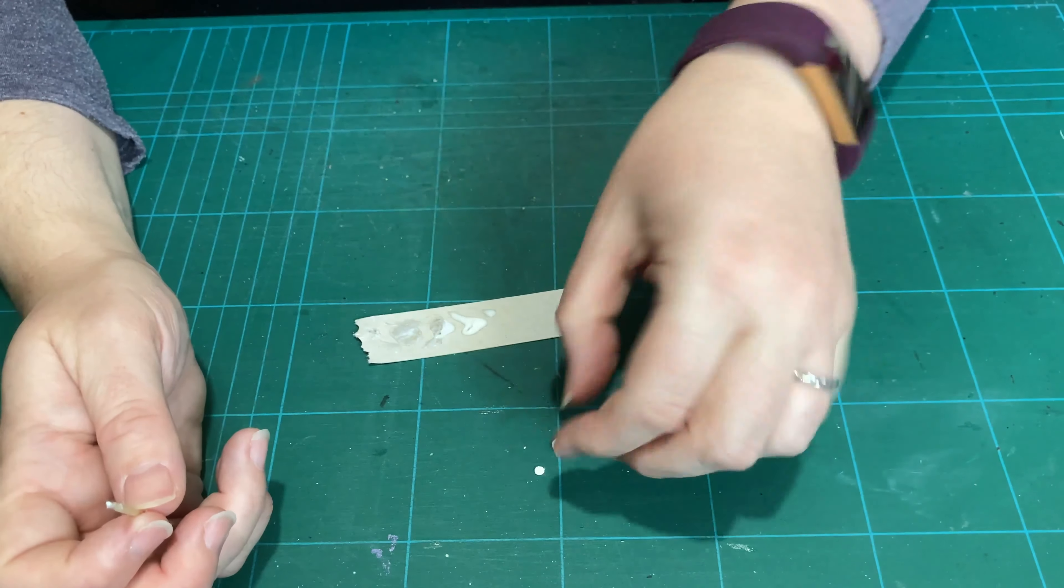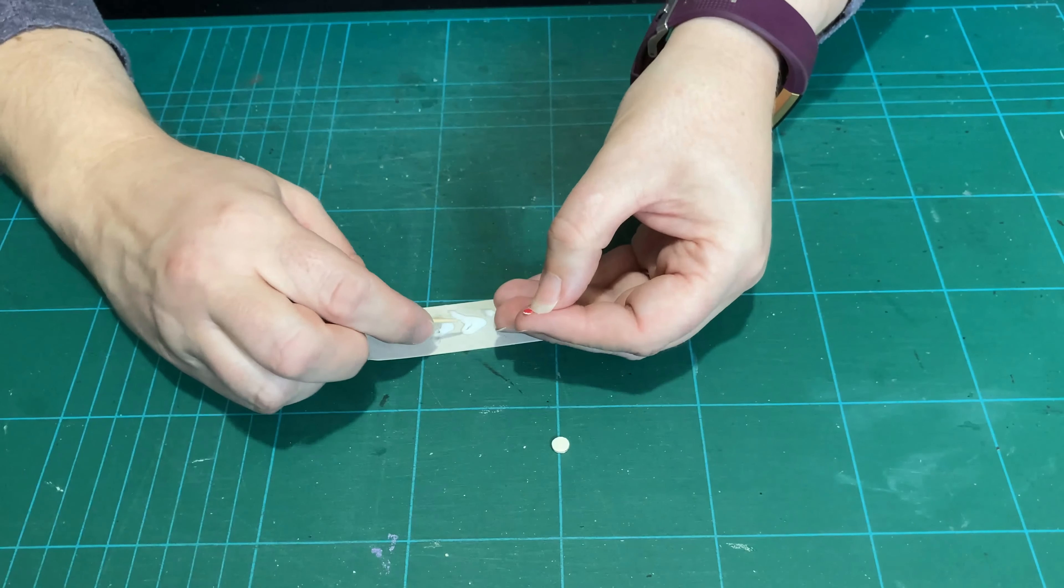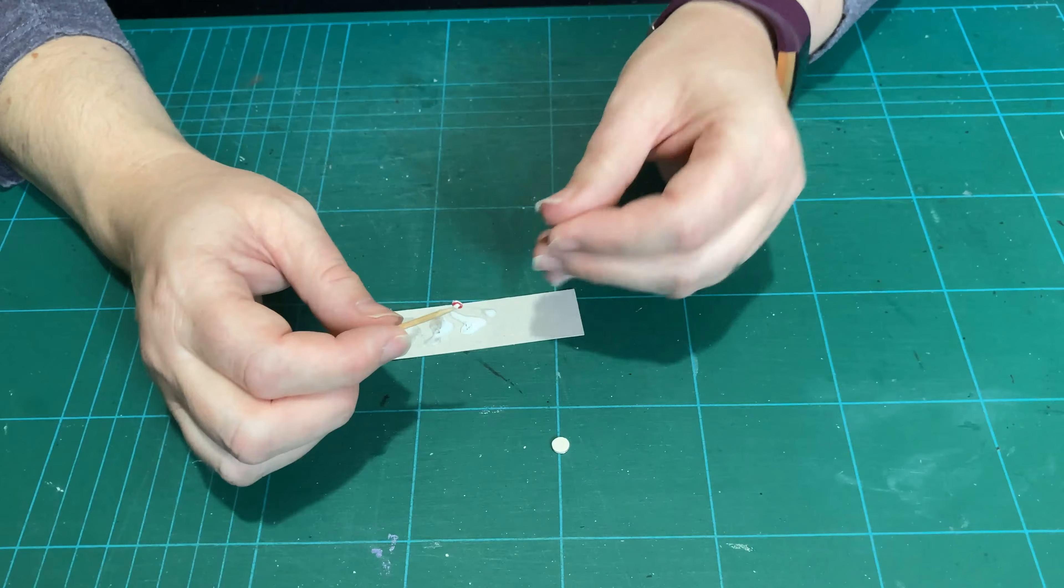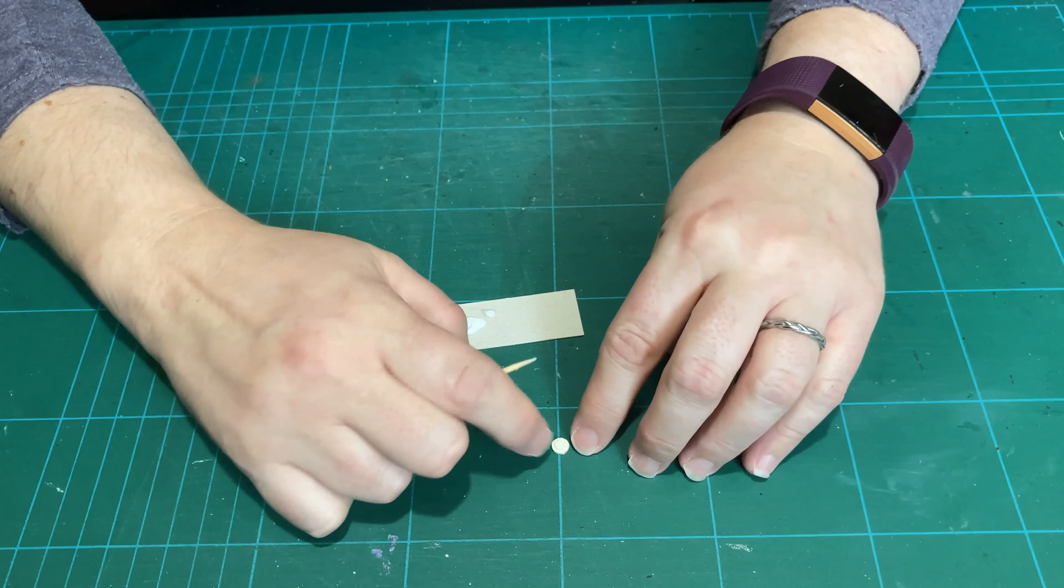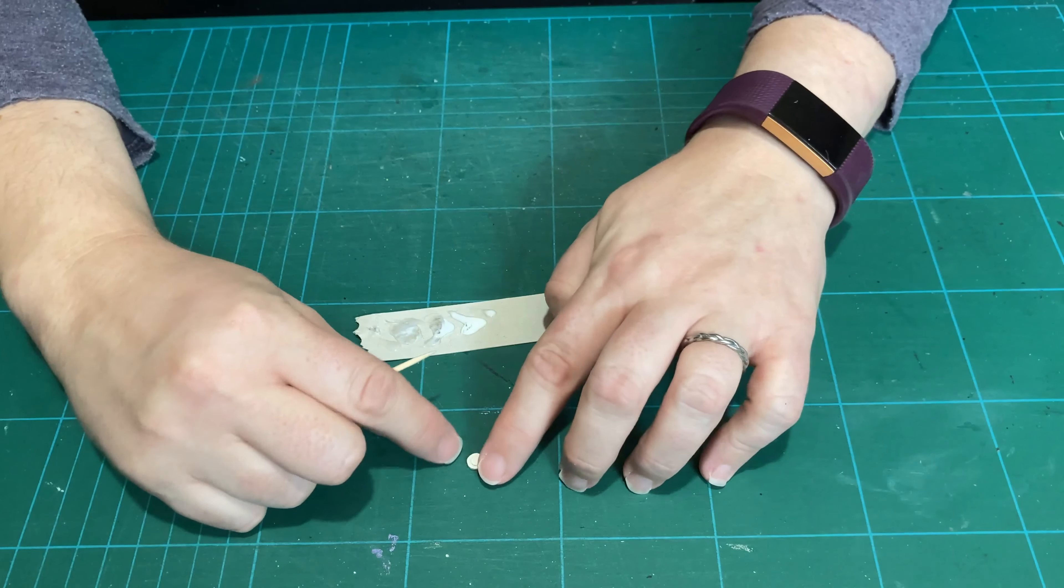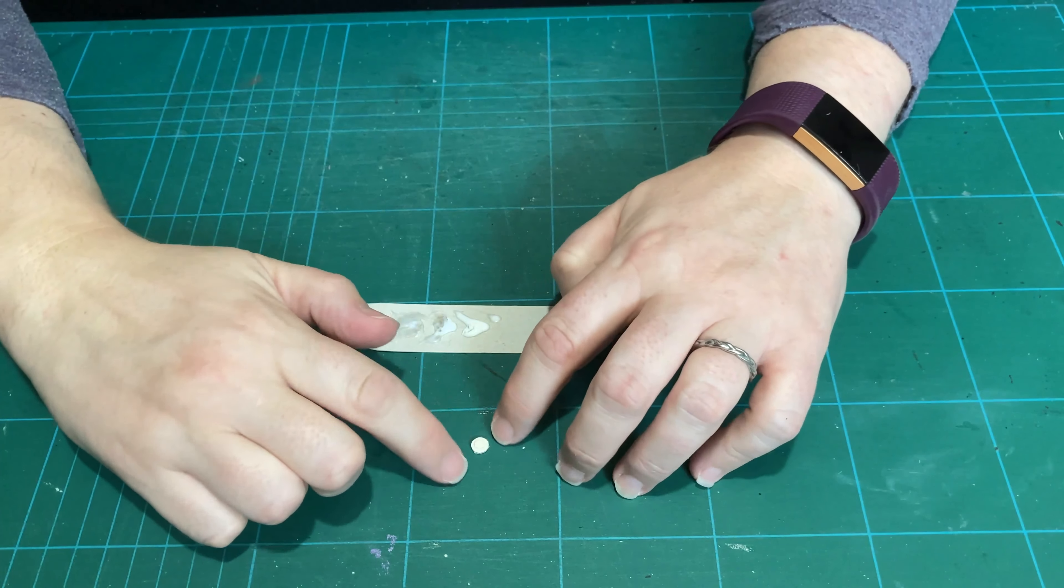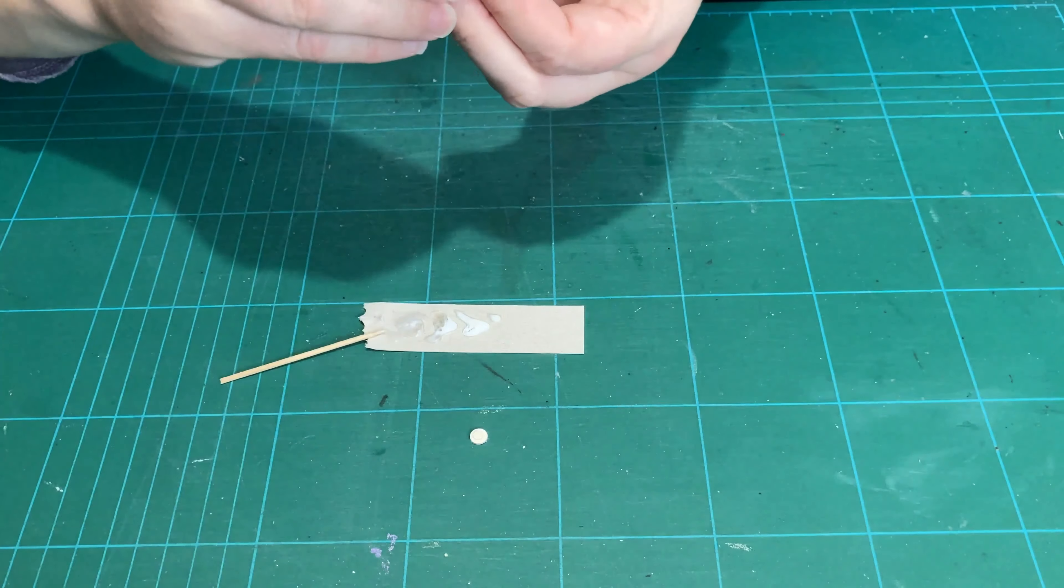Then taking the smaller one again, I'm going to add a little tiny piece of glue onto there and then just stick that on the top. So I've basically got a little pile. Now that won't actually take long to dry, but just in case, I have another one that I prepared earlier.